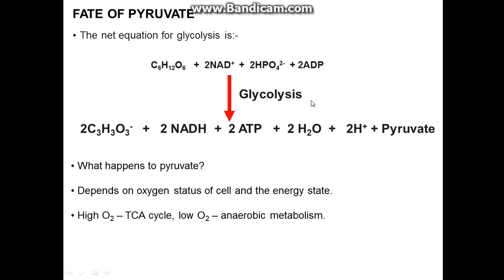In this episode I'm going to discuss the fates of pyruvate. As I've shown, we've gone through glycolysis in which we've taken glucose and we've put out 2 NADH, 2 ATP, and some pyruvate. And now, what happens to it after? It depends on the oxygen state of the cell and the energy state.